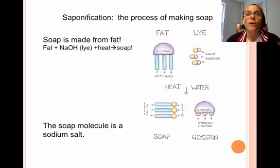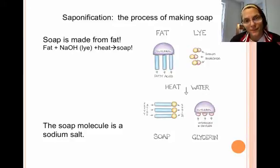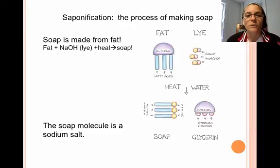Here's the saponification reaction. You're going to start with fat and you're going to react it with lye. Lye is just a generalized term for a strong base. And that strong base comes in and snips off those fatty acid chains and you get three soap molecules for each one molecule of a triglyceride. You also get a byproduct called glycerin, which you may have heard of, and there are glycerin soaps on the market as well.